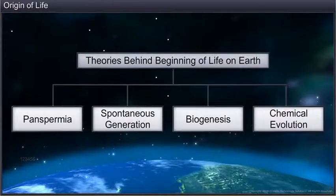There are different theories that try to explain the beginning of life on Earth. Some of them are Panspermia, Spontaneous Generation, Biogenesis, and Chemical Evolution.